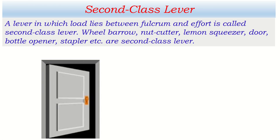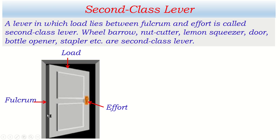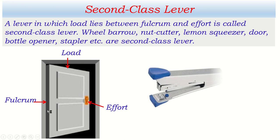Let's take another example — the door. A door is a second class lever because the weight of the door itself is the load. We apply effort at the free end, and the hinge acts as the fulcrum. This way, load lies between effort and fulcrum, making it a second class lever.